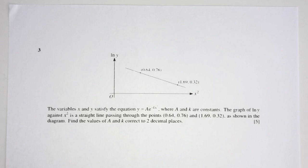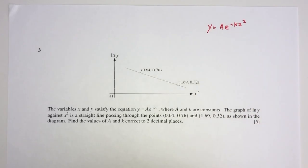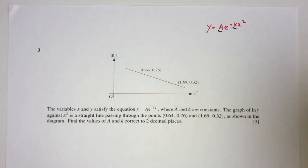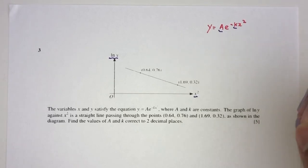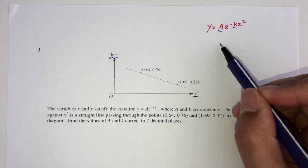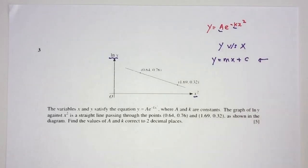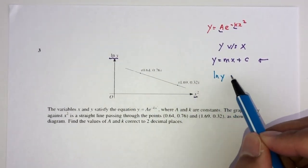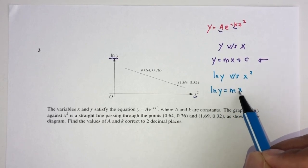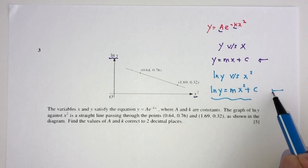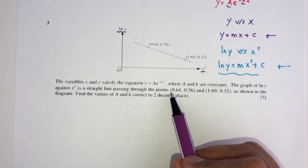Now let's move on to question number 3. Here variables x and y satisfy the equation y equal to a times e to the power of minus kx squared, where a and k are constants. Using a graph of ln(y) against x squared, which is a straight line, we recall that the equation of a straight line is y equal to mx plus c. Replacing variables, we get ln(y) equal to mx squared plus c. The graph passes through two given points as shown in the diagram.